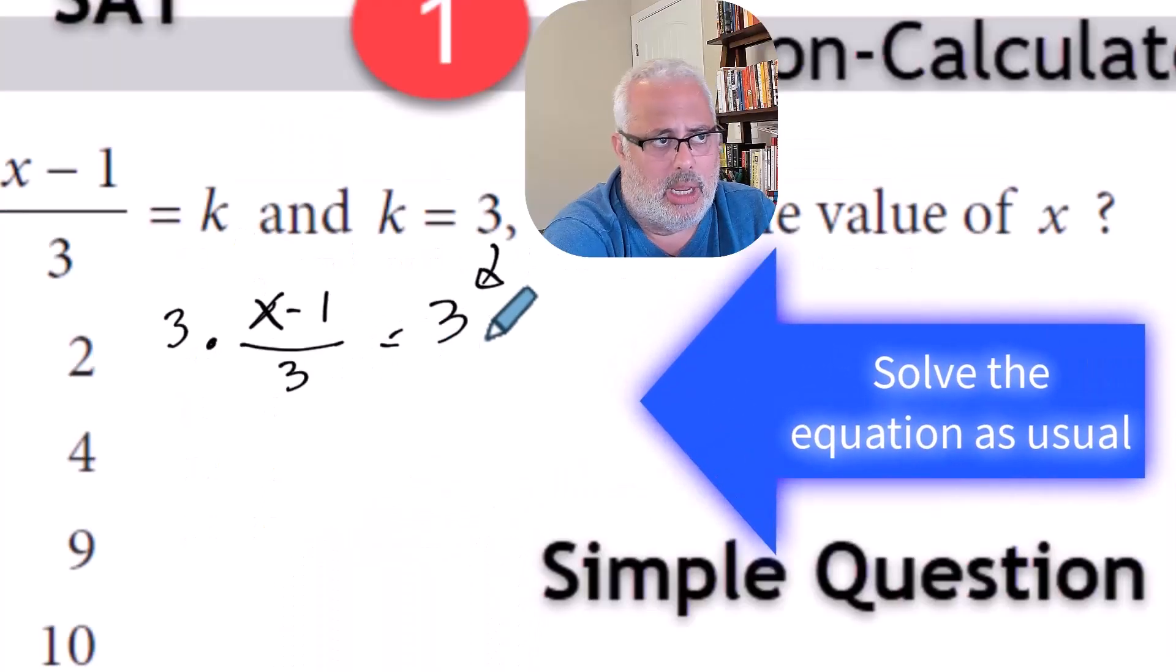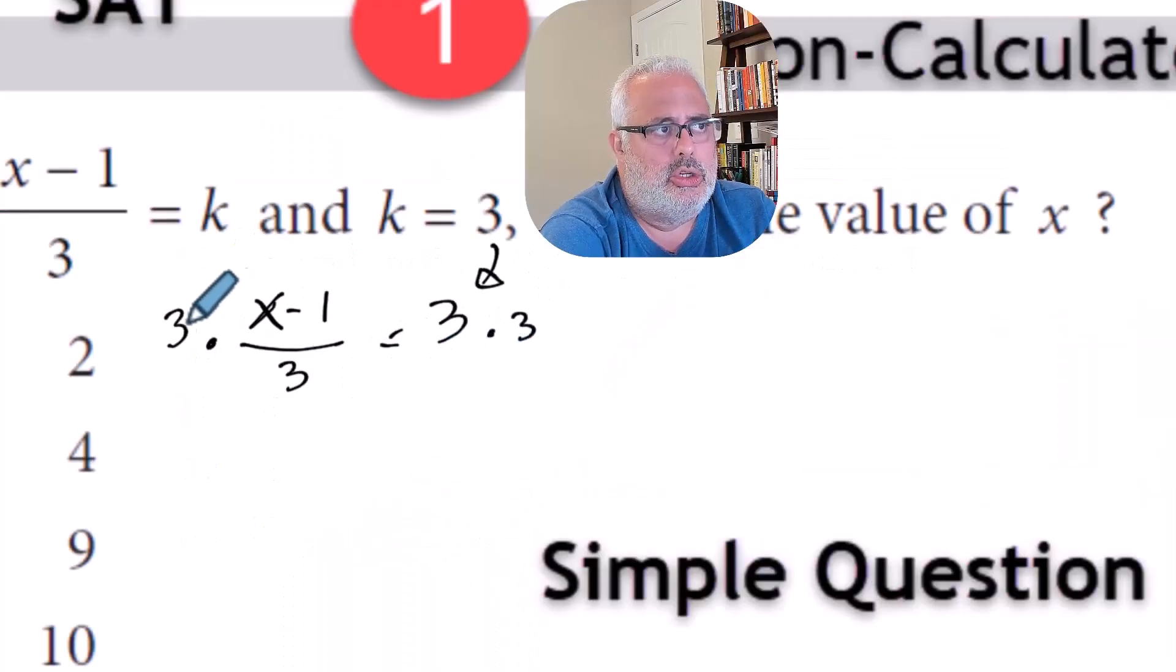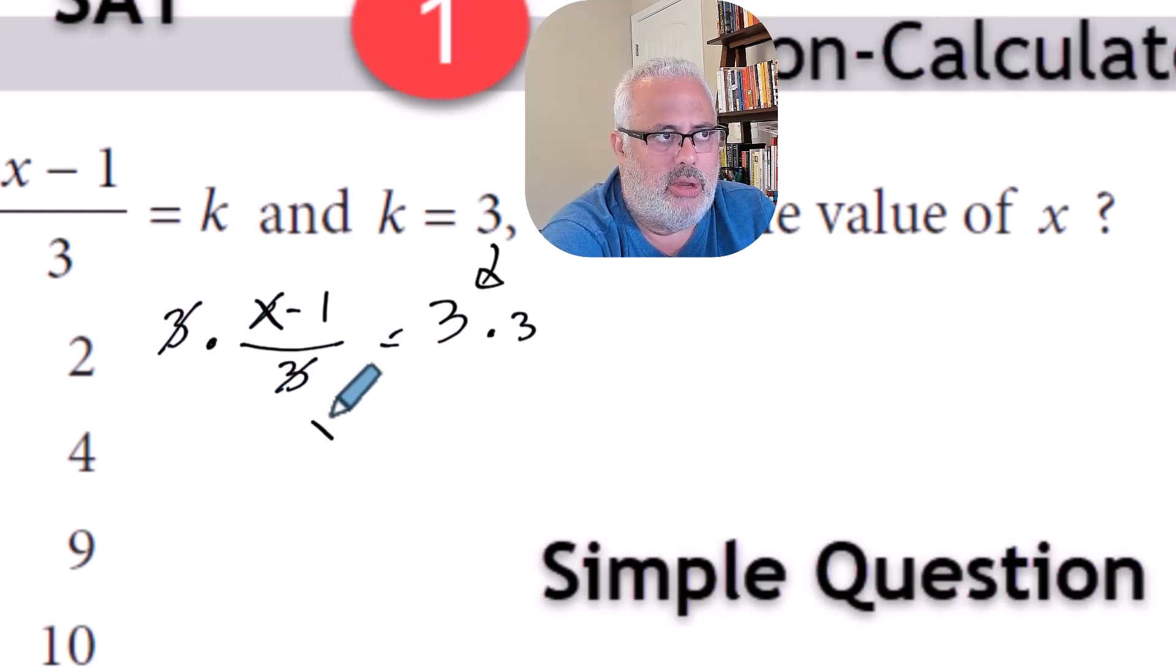But whatever is done in one side must be done in the other side. So you can cancel the 3 here and you get X minus 1 equals 9.